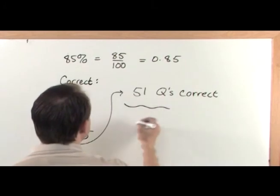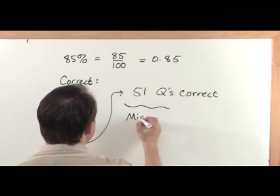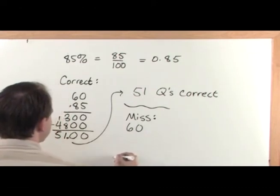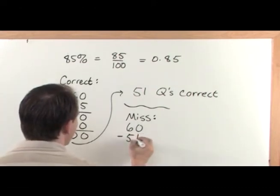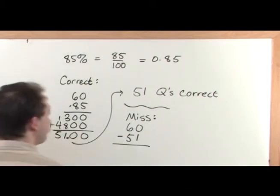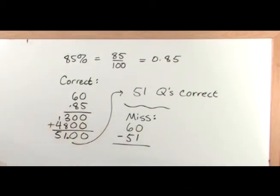So it's a simple thing to say, how many questions did he miss? I take the 60 questions on the test and I subtract the 51 questions that he got correct, and that will be how many he missed. So let's do that. What is 60 minus 51?